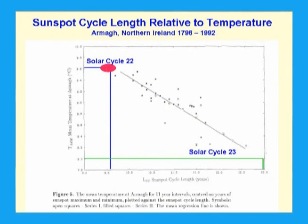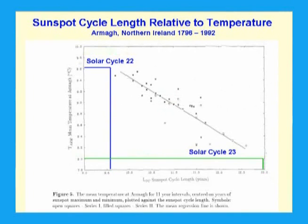Solar cycle 23 hasn't finished yet. If it was an average cycle length of 10.7 years, it would have finished in January 2007. It is now mid-2007. As we haven't seen the first sunspot from solar cycle 24 yet, solar cycle 23 will be at least 12 years long.